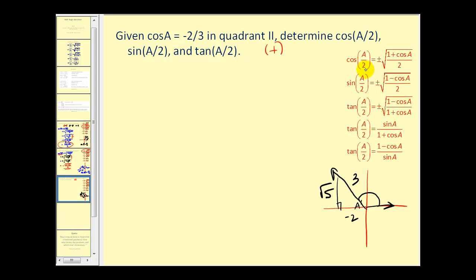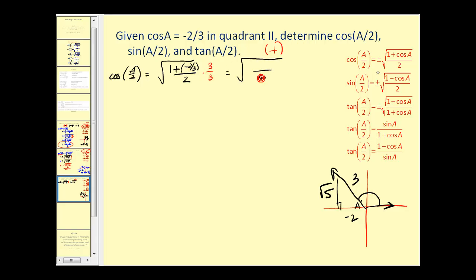Let's go ahead and find these function values. Cosine of A over two is equal to the square root of one plus cosine A — which is negative two thirds — all over two. Remember we already determined all these would be positive. Let's clear the fractions. Our denominator would be six. The numerator would be three plus negative two, which gives us the square root of one sixth, which is equal to one over the square root of six. If we rationalize this, we have the square root of six over six. Now let's find the sine of A over two.